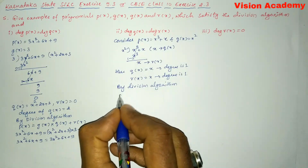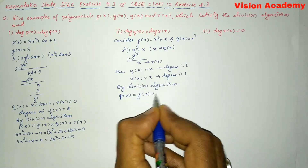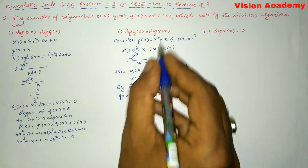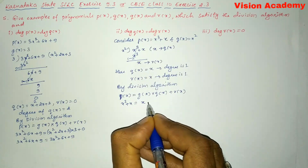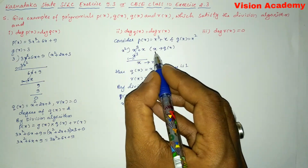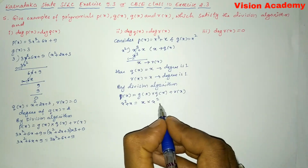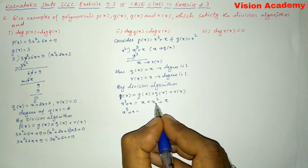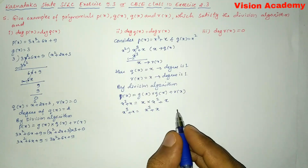By the division algorithm, p(x) = g(x) × q(x) + r(x). So p(x) = x³ + x = x² × x + x = x³ + x. Therefore LHS equals RHS and the division algorithm is satisfied for Roman number 2.